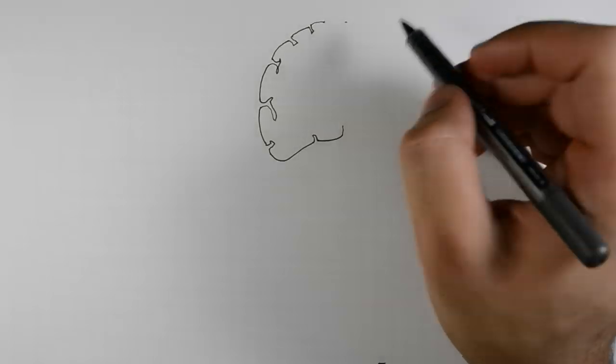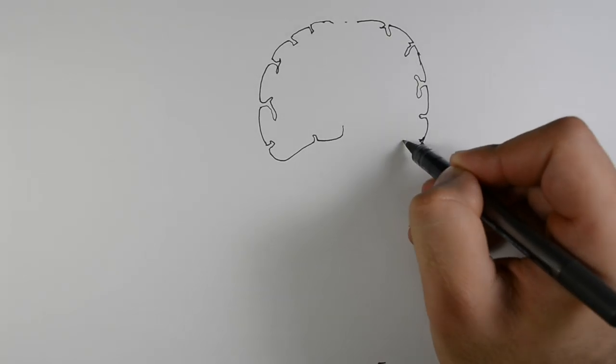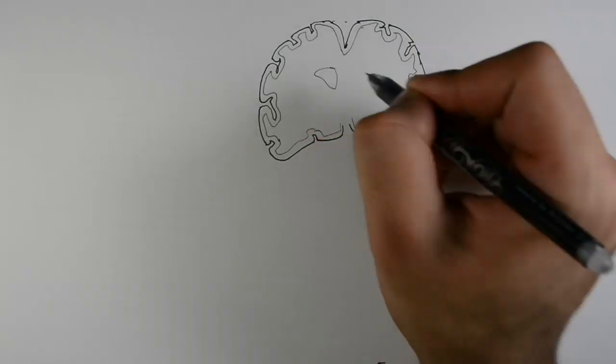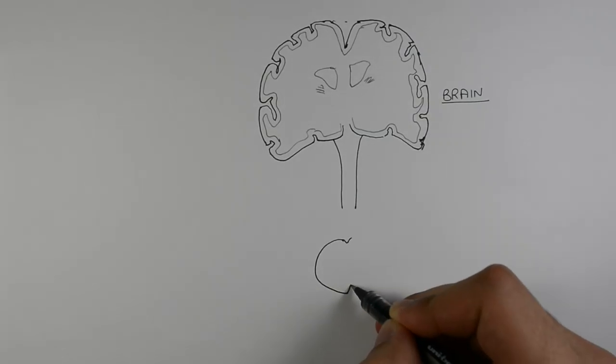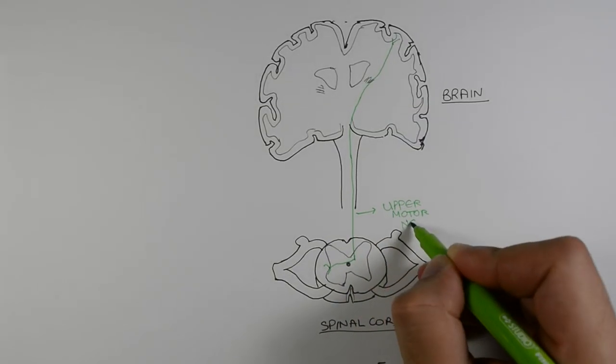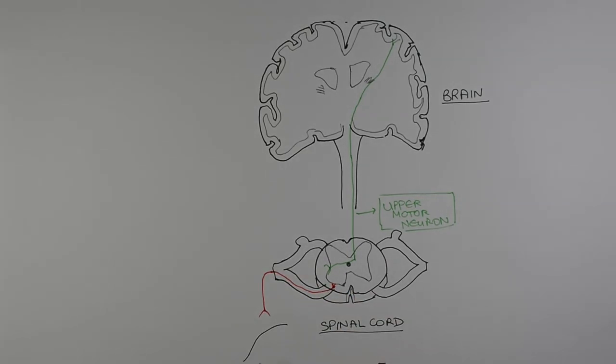Motor neurons can be divided into two main types, upper and lower motor neurons. Upper motor neurons carry information from the brain down to the spinal cord and activate the lower motor neurons. The lower motor neurons attach to our muscles and act as a link between the upper motor neurons and the muscles, allowing for movement.